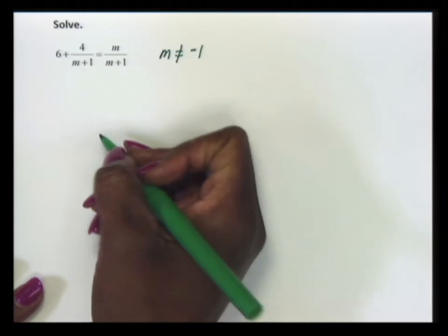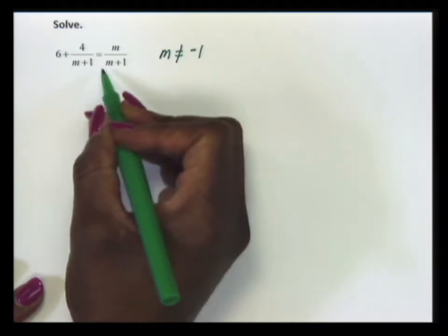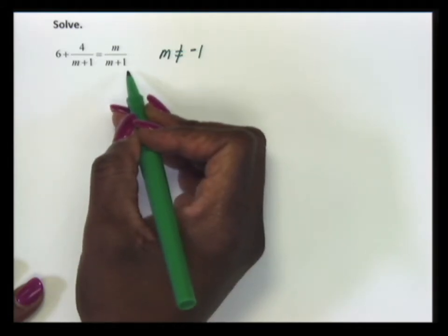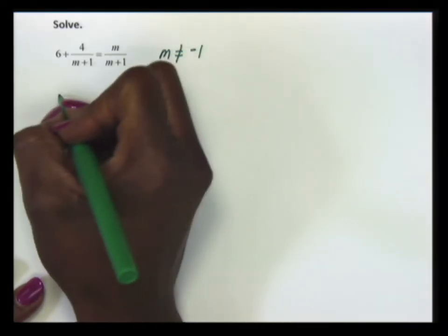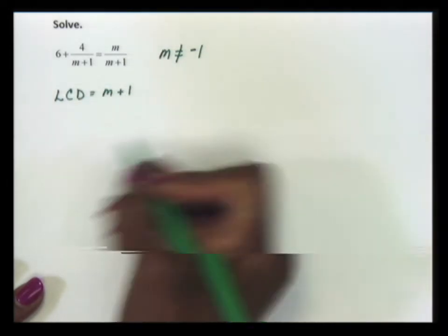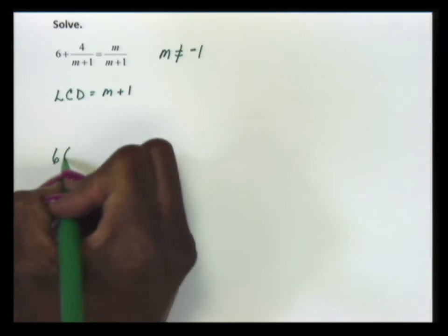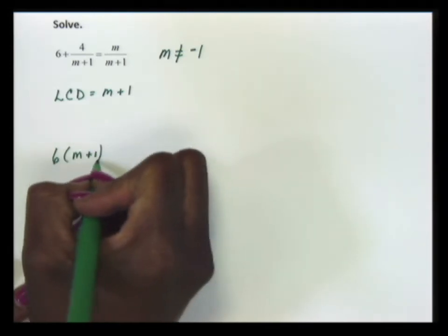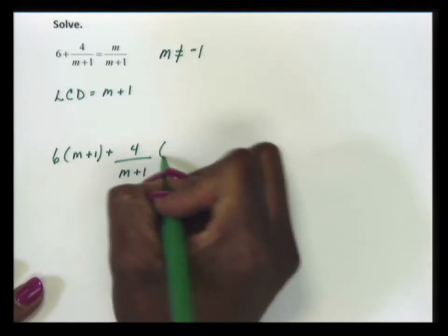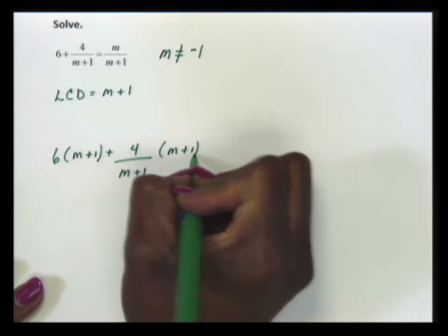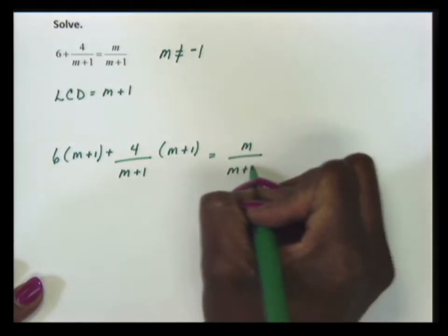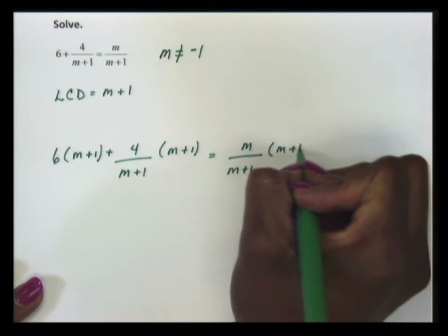To solve the equation, we'll multiply every term by the least common denominator, which is m plus 1. So I have 6 times m plus 1, plus 4 over m plus 1 times m plus 1, equals m over m plus 1 times m plus 1.